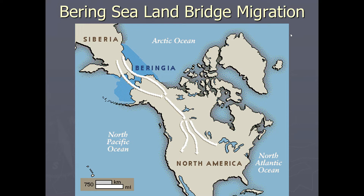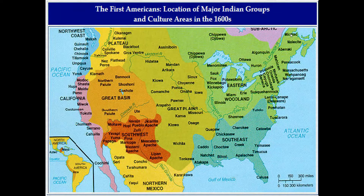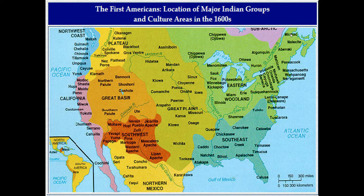By the time of European discovery in 1491, there were perhaps as many as 100 million Native Americans, a vast majority living in Central and South America. For this course, you only need to focus on what's happening in the Americas. One important topic is the story of American civilization, and as we begin to push west, our 13 colonies are established on the East Coast.